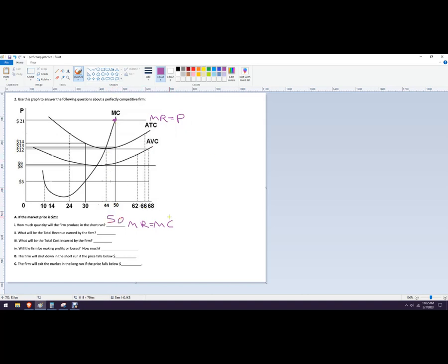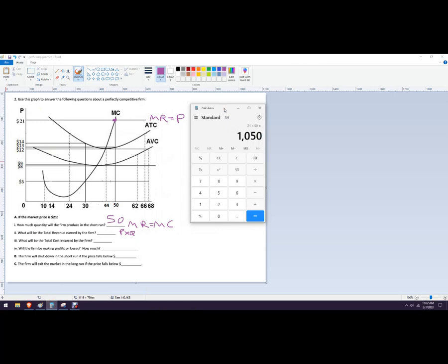Total revenue earned by the firm. Total revenue is just going to be price times quantity. So we know the quantity is 50, we know the price is 21, so let's grab a calculator. 21 times 50 equals 1050.